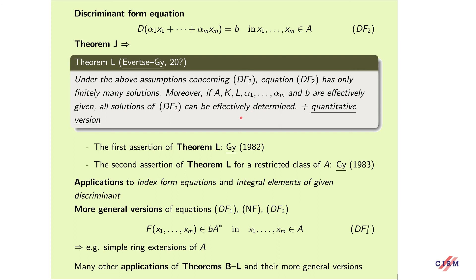As to the discriminant form equation, Corollary G implies that under the appropriate assumptions concerning this equation, the discriminant form equation has only finitely many solutions; moreover if A, K, L, alpha₁,...,alpha_m are effectively given, then all solutions can be effectively determined, and we gave a quantitative version. The first finiteness result was already proved in 1982, and the second for a restricted class in 1983. This has applications to index form equations and integral elements of given discriminant. We also considered more general versions of these equations where on the right-hand side b is replaced by b times a unit, which is also unknown; such a generalization is useful for example to get general results on simpler ring extensions of A.